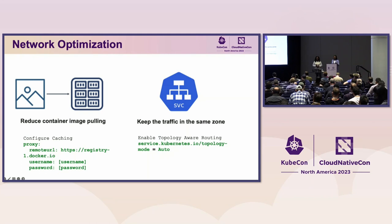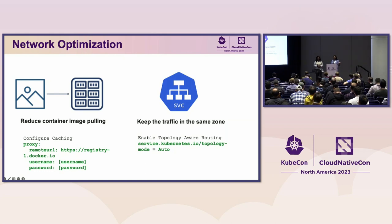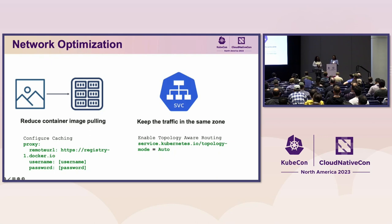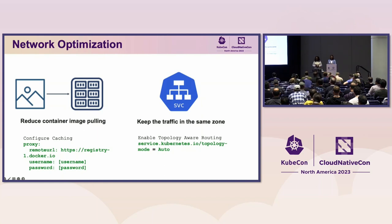Similarly with your pods: pods can talk across multiple zones and regions depending on your configuration. But do they really need to talk across zones one, two, and three? Most likely not. Think about using topology-aware routing, which is now released in Kubernetes 1.28. This way you can make sure your pods only talk to pods in their own zone. These are quick, tactical ways to start saving on costs — they may seem obvious, but they often go forgotten.